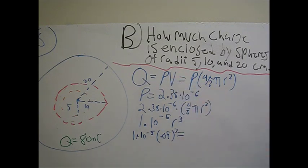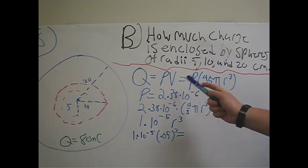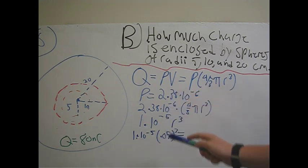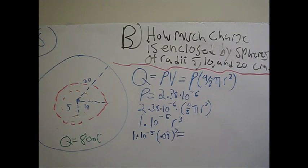V being the volume we found in Part A of 4/3 π r³. And then the value for ρ we found also in Part A, which is 2.38 times 10⁻⁶.